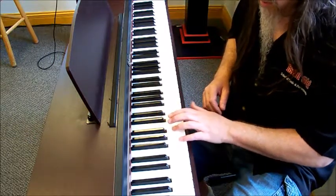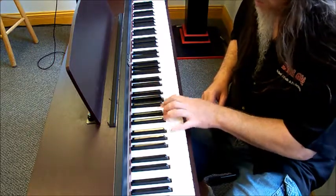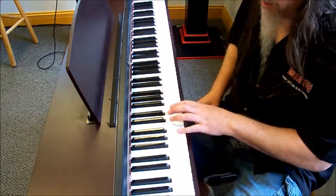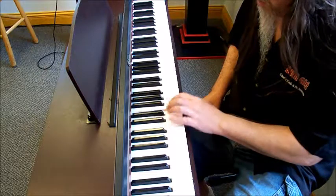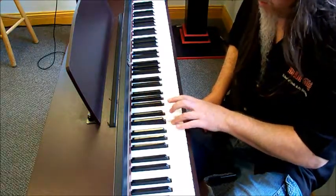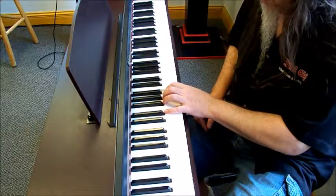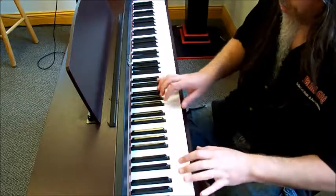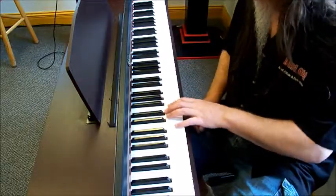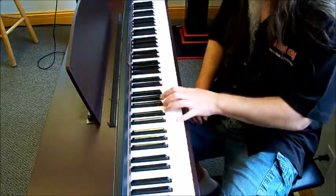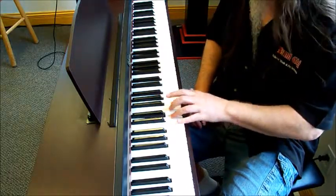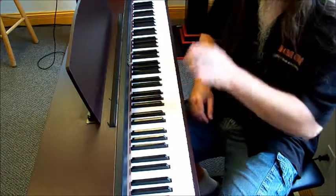Starting on G, G Mixolydian. Starting on A, A Aeolian, which is also the A minor, natural minor scale. Whoops. Starting on B is B Locrian. I'm starting to cross over to where the right hand side of my body, so I would be sort of playing with this hand. But you get the idea. So that's the B Locrian, and then we're right back to C.